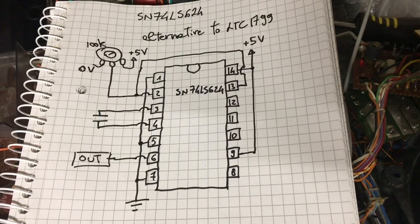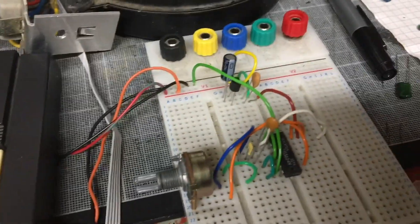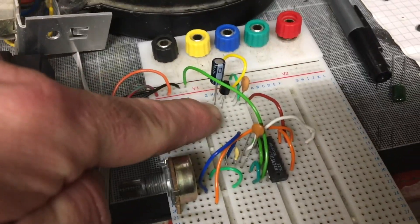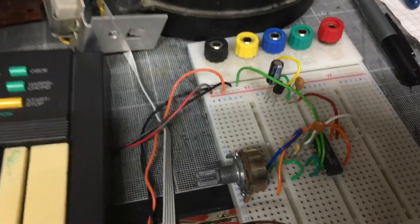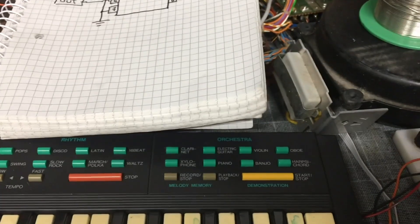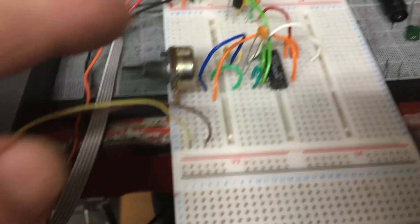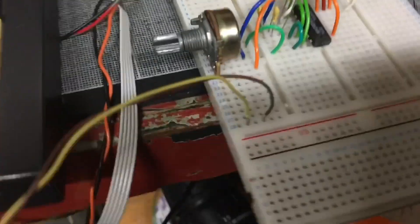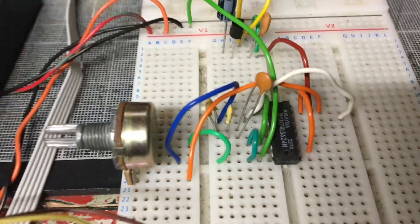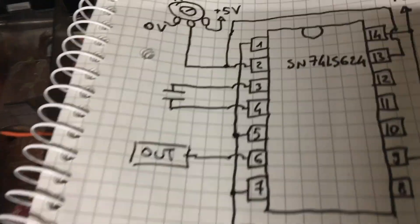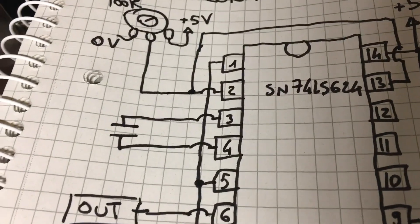It works on 5 volts as well, similar to the 1799, so here on the breadboard I put a voltage regulator so that I don't run the risk of burning it. It doesn't need many controls. Here there is a potentiometer and I'm using a 100k.